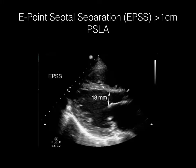The second criteria is the E-point septal separation. It is the distance between the anterior mitral valve leaflet and the interventricular septum in the parasternal long axis view during diastole. A value over 1 cm is one of the criteria for severe left ventricular dysfunction, and can be visually estimated as well.